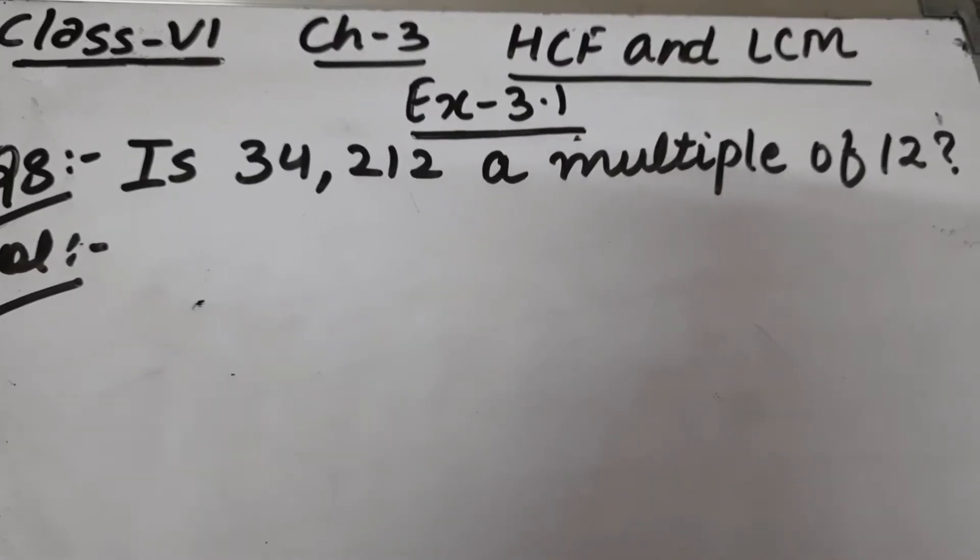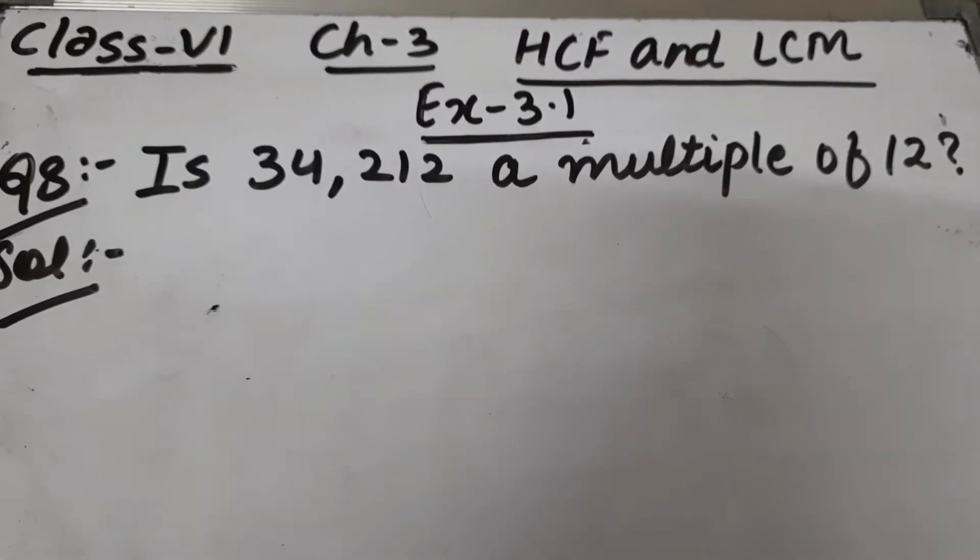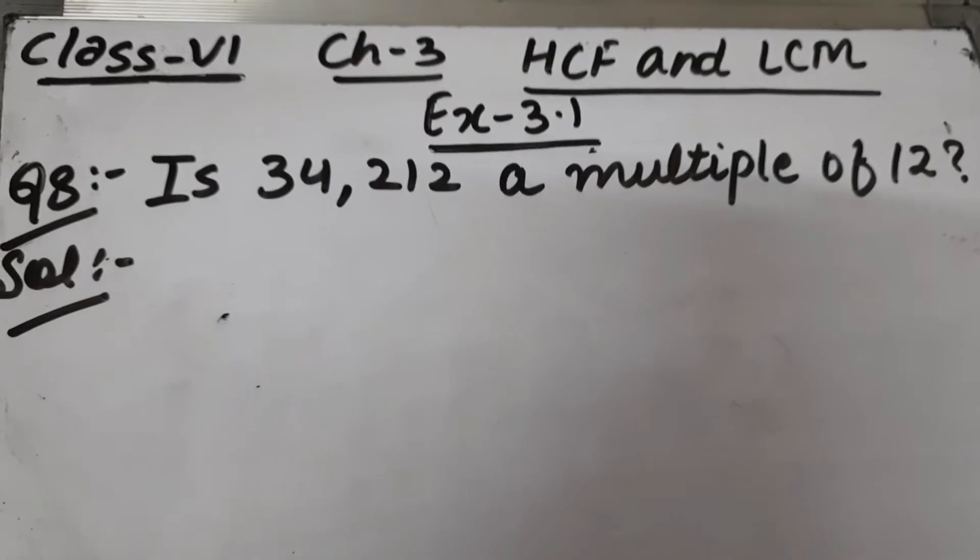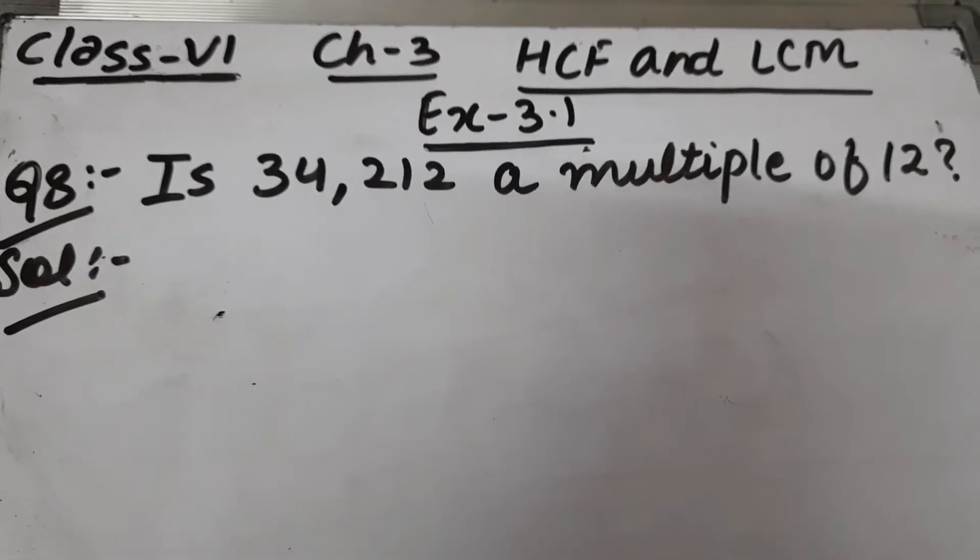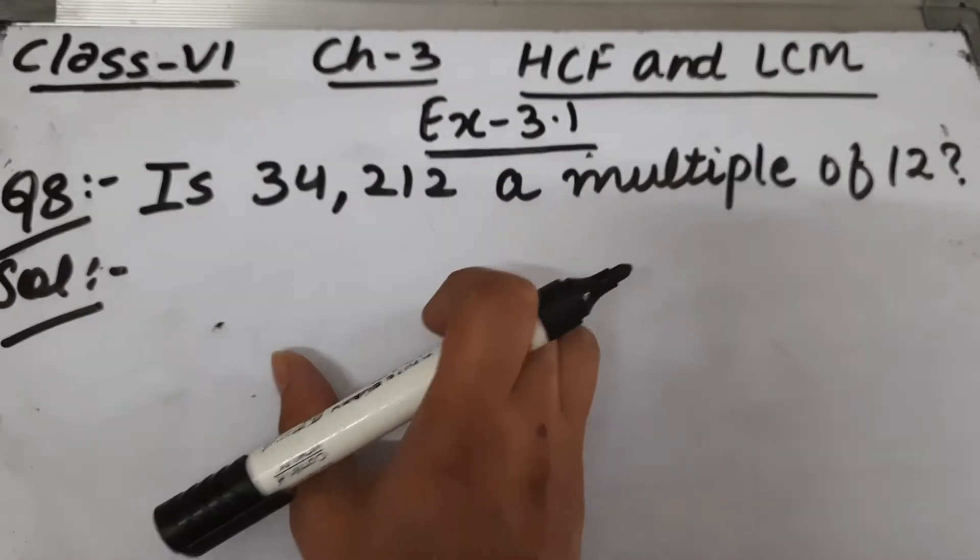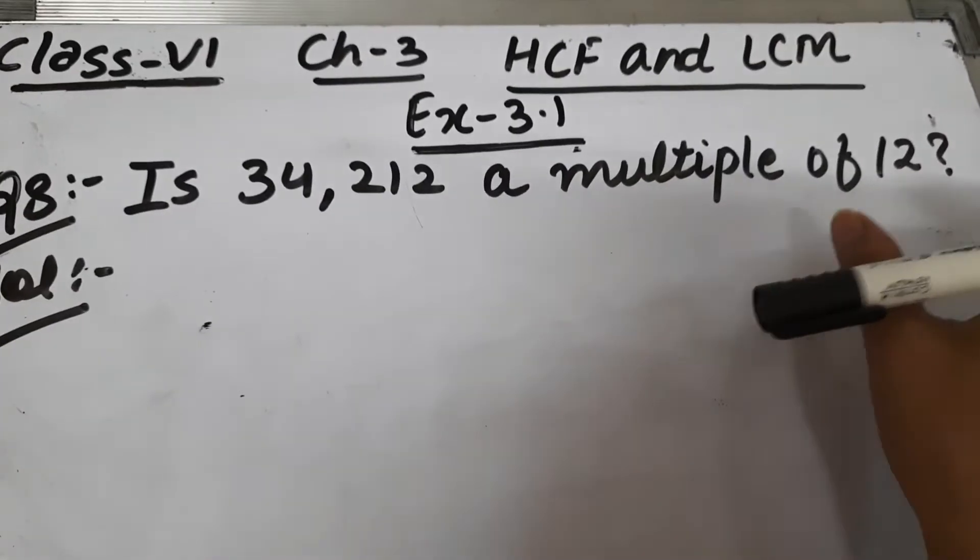Let's start question number 8 of exercise 3.1. The question is: Is 34,212 a multiple of 12?